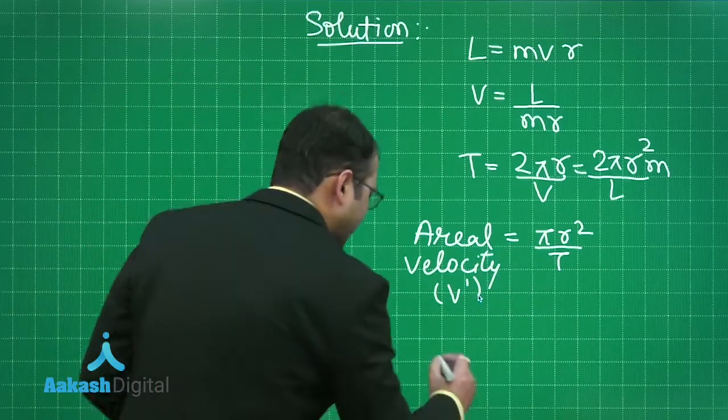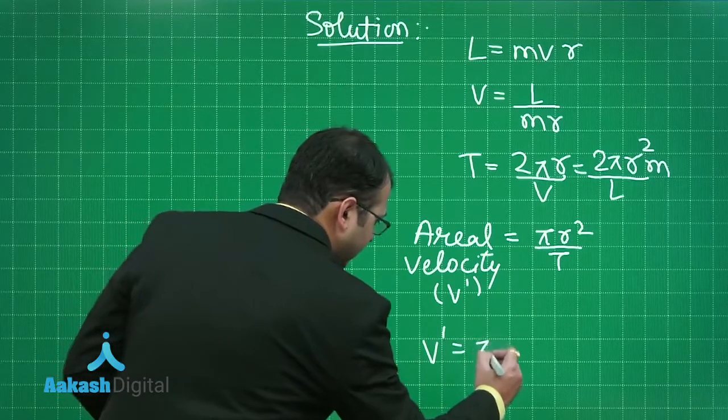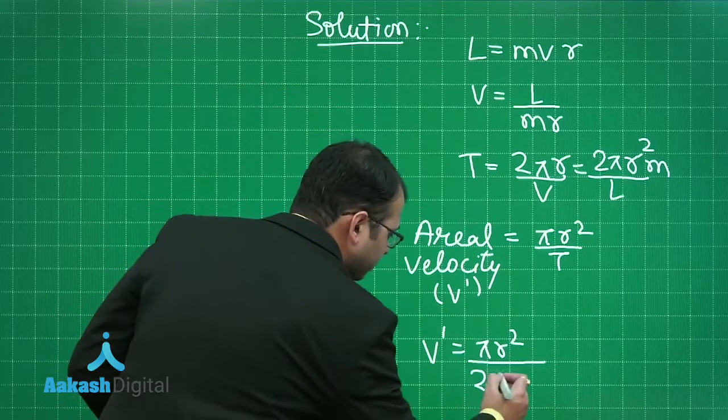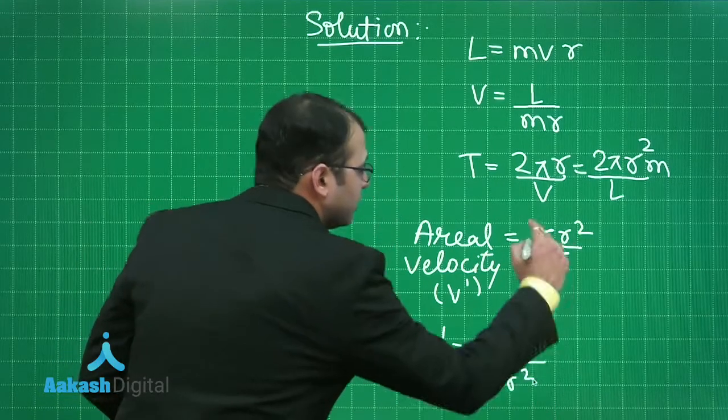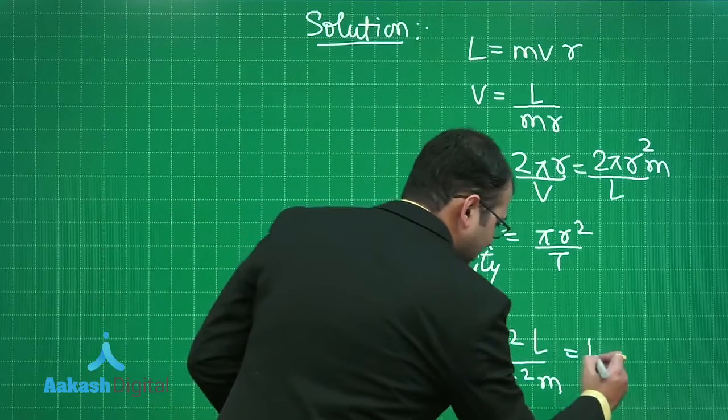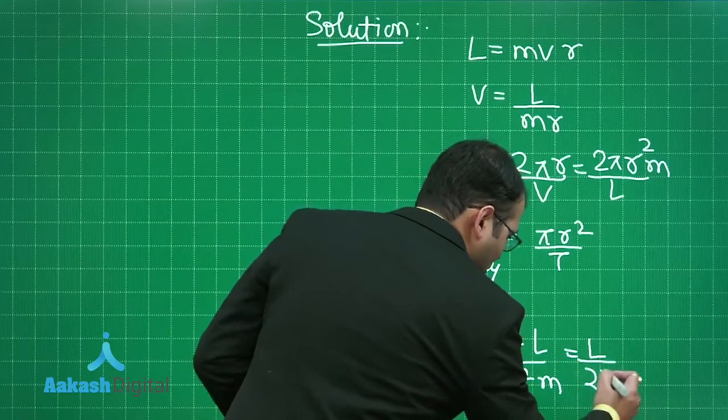Now let's put down the values of T. V dash would be equal to pi R square the whole divided by what is the time, 2 pi R square. This M will come here and L will go up. You will see the final answer is L by 2 M.